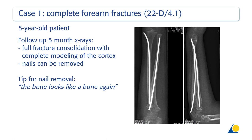As correct bone healing was achieved, the nails can be removed. A clear sign for nail removal is when the bone has regained its healthy and natural appearance — meaning the bone looks like a bone again.